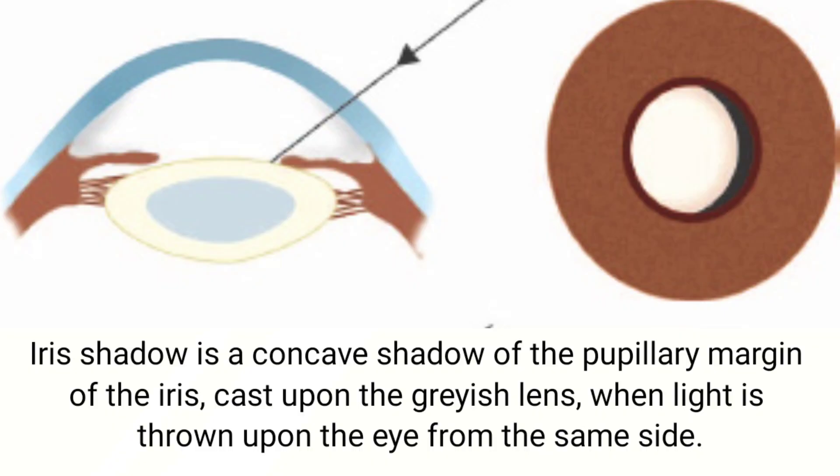So now when we know what a shadow is, the requirements for shadow formation, and how it forms — can we connect it to the eye and cataract? Iris shadow is a concave shadow of the pupillary margin of the iris cast upon the grayish lens when light is thrown upon the eye from the same side obliquely.